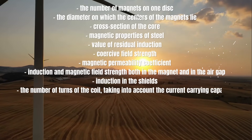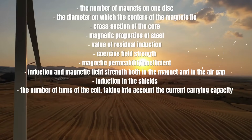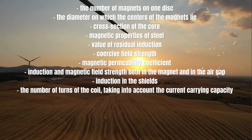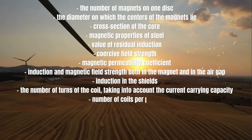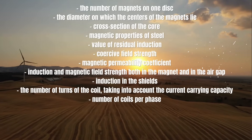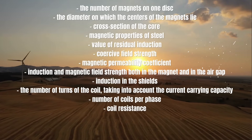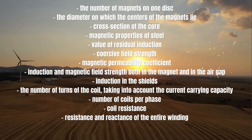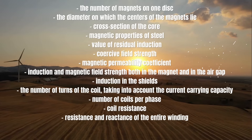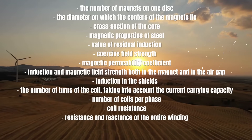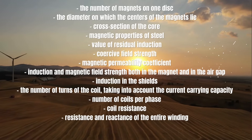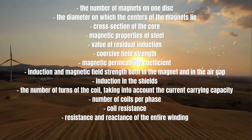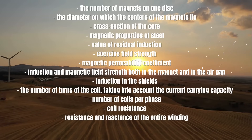The number of turns of the coil, taking into account the current carrying capacity. Number of coils per phase. Coil resistance. Resistance and reactance of the entire winding. And after all this, we can calculate the voltage at a certain speed and the power of the generator.